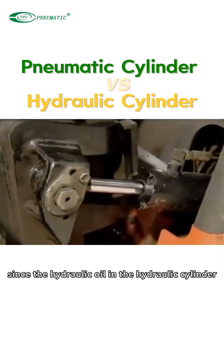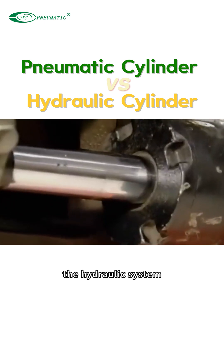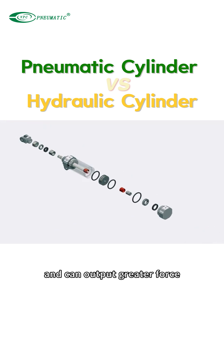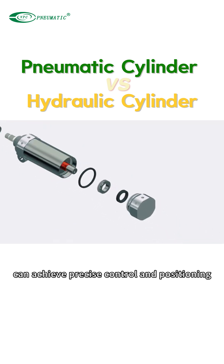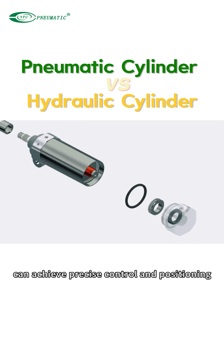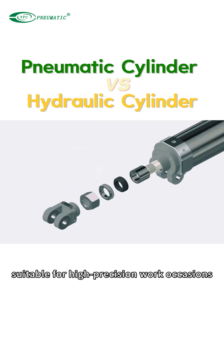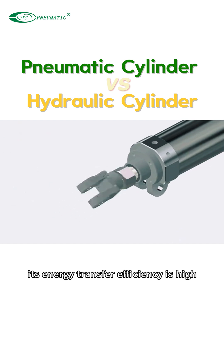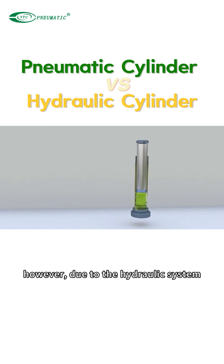Since the hydraulic oil in the hydraulic cylinder is incompressible, the hydraulic system can work at higher pressure and output greater force. The hydraulic cylinder can achieve precise control and positioning, making it suitable for high-precision work applications. Its energy transfer efficiency is high, converting more input energy into mechanical energy.